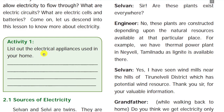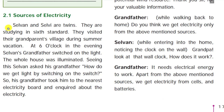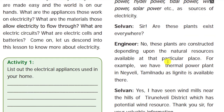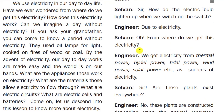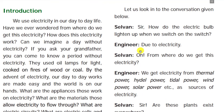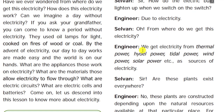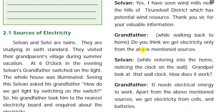The lesson starts with a simple conversation with Selvan and an engineer. First, there is an activity: list the electrical appliances used in your home. The sources of electricity are introduced with the help of a simple story. Selvan and Selvi are twins who went on vacation to their grandparents' house. At six o'clock the grandparents switched on the light. Selvan asked how the lights are illuminated, and the engineer explained: due to electricity.